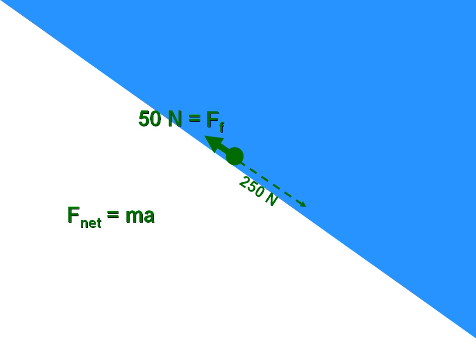Now if we take a look at Newton's second law, which is force net equals mass times acceleration, our net force here is 200 newtons down the ramp.